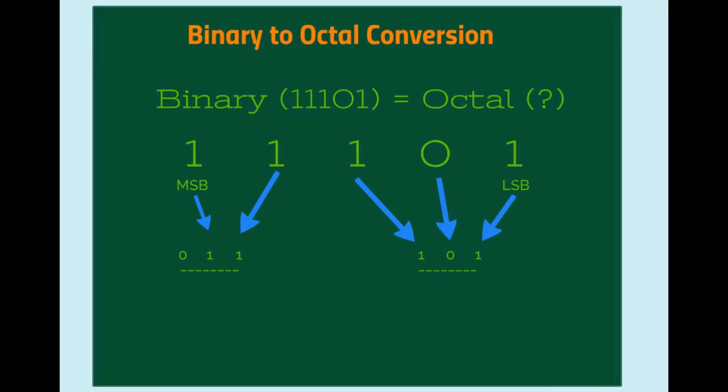Now this 0 1 1 is 3 and this 1 0 1 is 5. This 3 is MSB and this 5 is LSB. So after arranging from MSB to LSB we get the octal number 3 5. So binary 11101 is equal to octal 35.